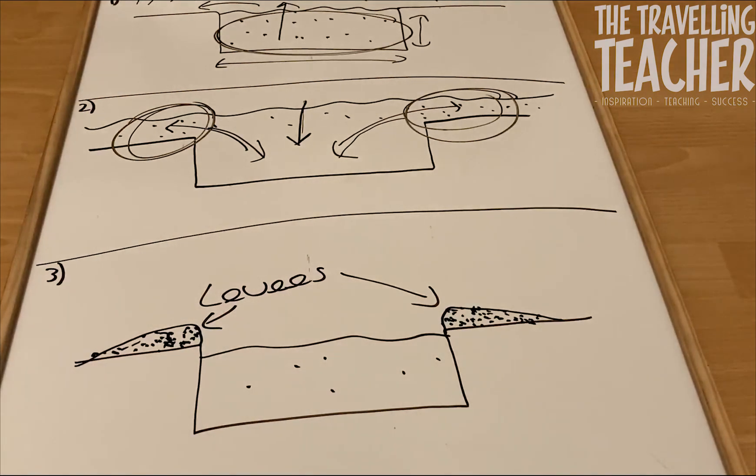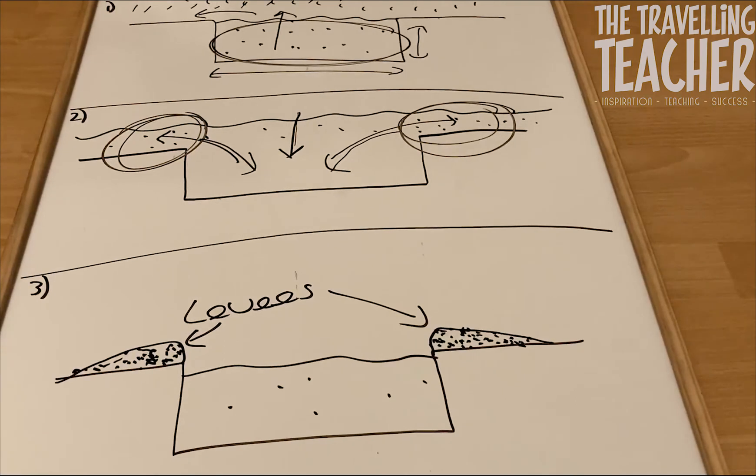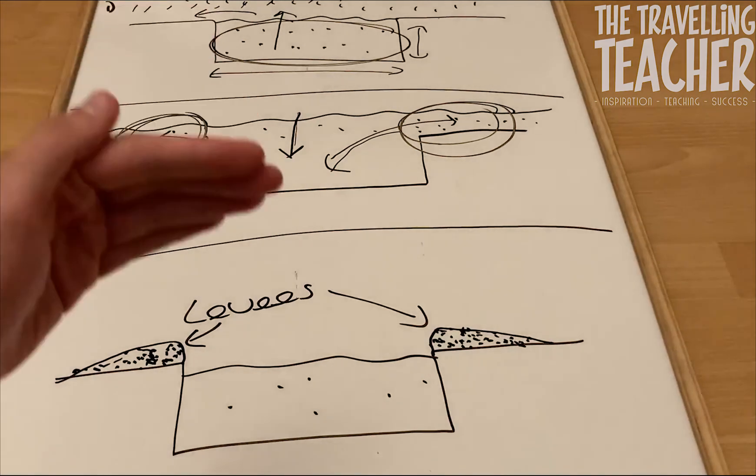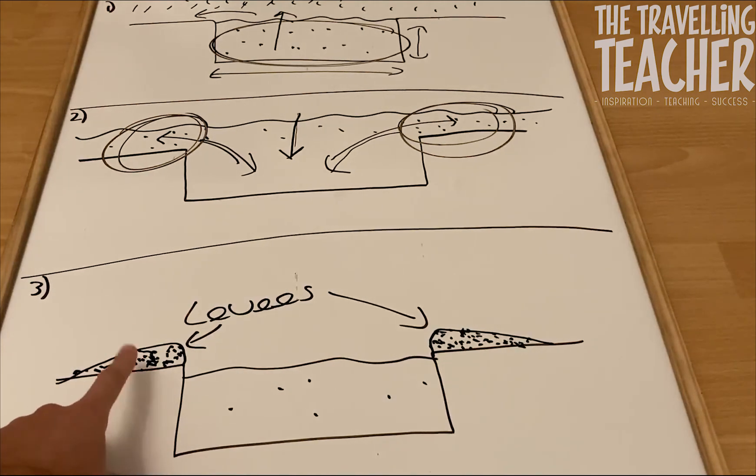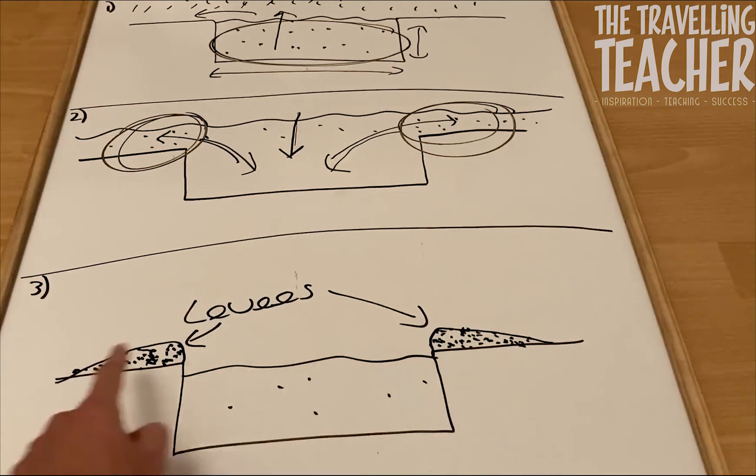And that's it. So a levee, obviously, it's formed by flooding and deposition. Small pieces of sediment in the river channel get lifted onto the flood plain when the river floods. When the water levels return back to normal, the sediment is deposited. It's dropped on either side of the river on the flood plain. This builds up over time to eventually form natural, raised river banks called levees.